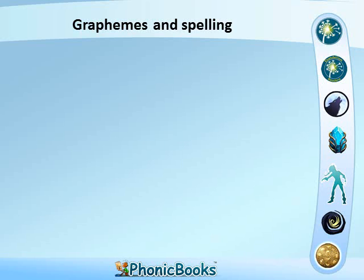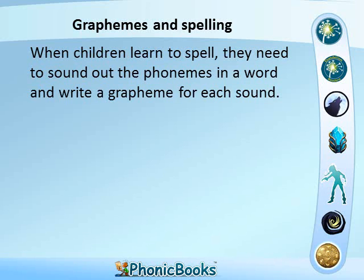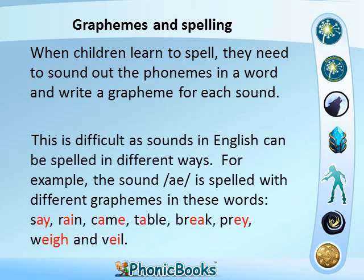Graphemes and spelling. When children learn to spell, they need to sound out the phonemes in a word and write a grapheme for each sound. This is difficult as sounds in English can be spelled in different ways. For example, the sound A is spelled with different graphemes in these words: say, rain, came, table, break, pray, weigh, and veil.